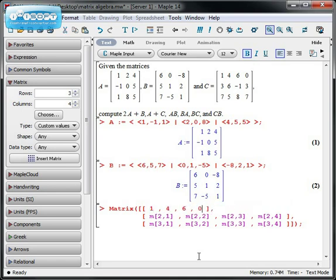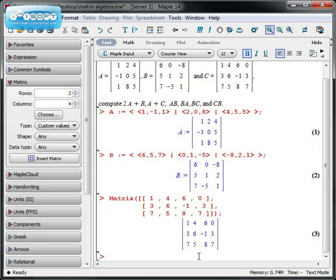I type in each row entry and then hit tab to the next one: 1, 4, 6, 0, then 3, 6, -1, 3, then 7, 8 or 5, 8, 7. By entering them in term by term, I can enter in the matrices by their rows. Now let me go back and name this matrix C in hindsight. And now I have my three different matrices A, B, and C.